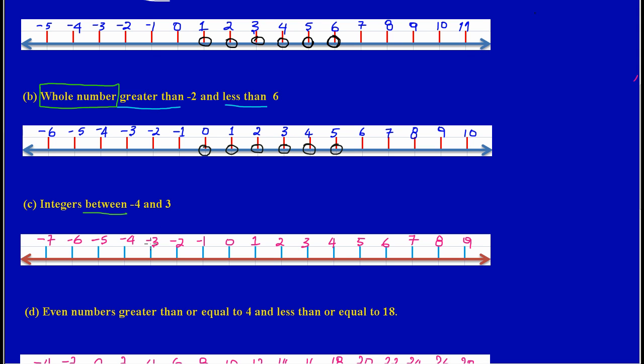So my integer here would be negative three then negative two then one then zero then positive one and positive two. Now if you notice I have circled the integers or I have graphed the integers that are between these two boundaries. Negative four and positive three are excluded. All right good moving on.